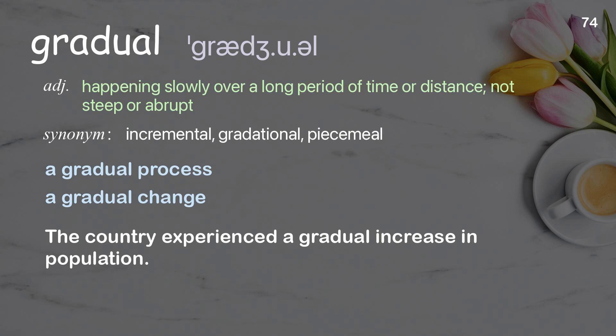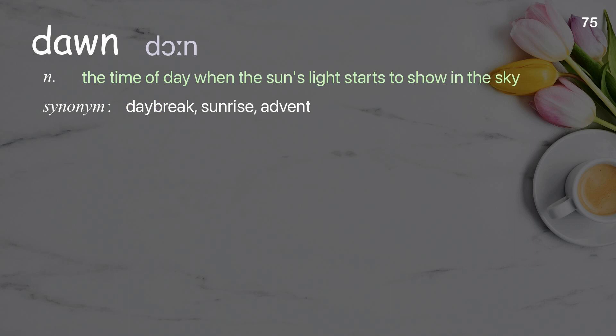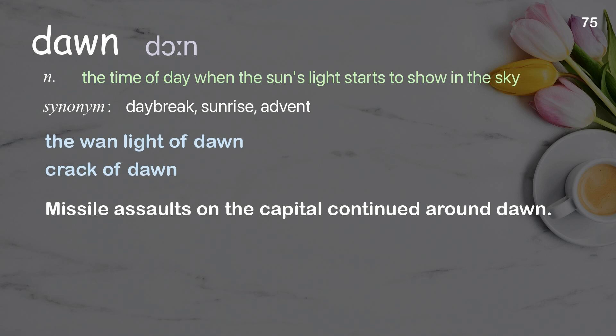Dawn: the time of day when the sun's light starts to show in the sky. Examples: the one light of dawn, crack of dawn. Missile assaults on the capital continued around dawn.